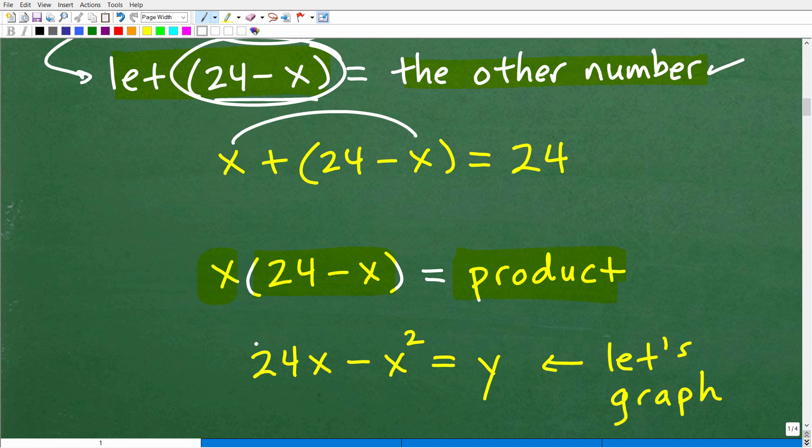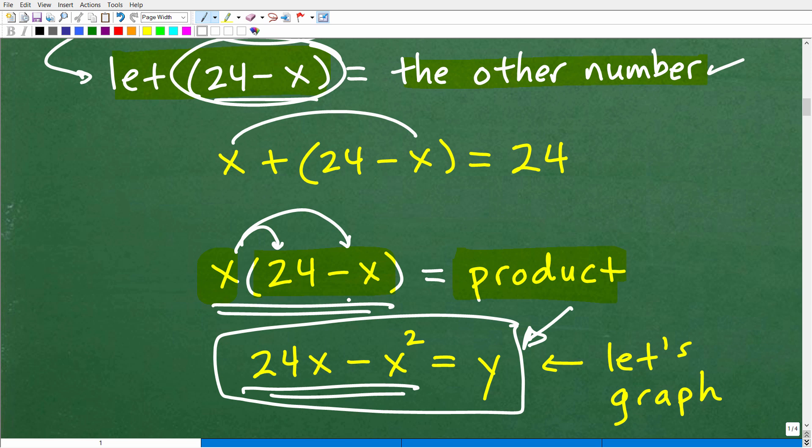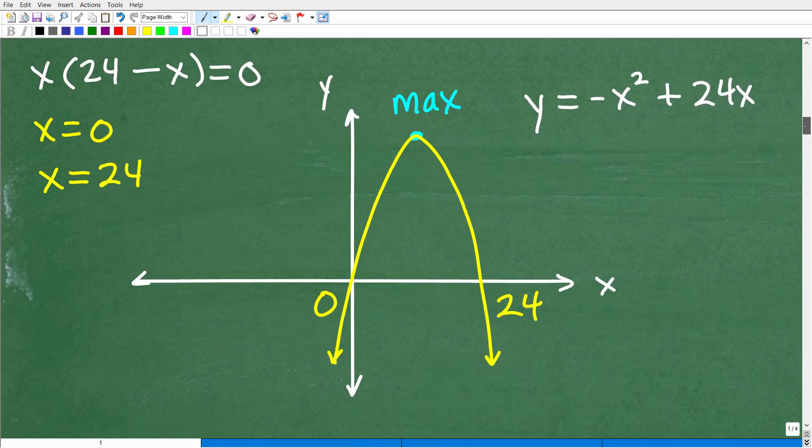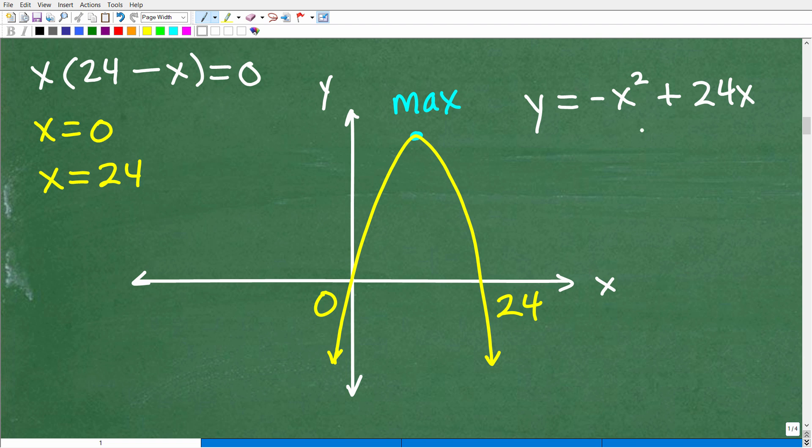We're trying to find the greatest maximum product with our restriction that the sum of them is 24. The way to do this is let's go ahead and actually multiply this X in here. If you're looking at this, you're saying this kind of reminds me of a quadratic equation. That is excellent because that's exactly what this is. We can distribute this X. We'll end up with 24X minus X squared. We can look at the graph of this.